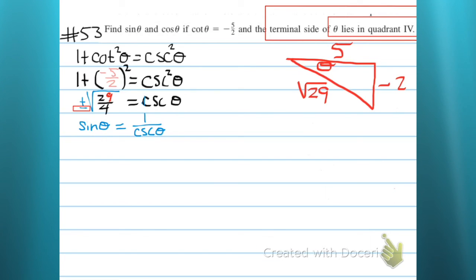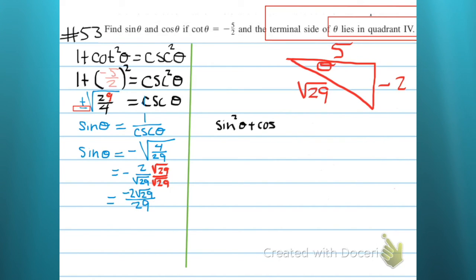And now we're using the reciprocal identity. The sine is equal to one over the cosecant of theta. So then I go ahead and I put that in there. I reciprocate and take the reciprocal. Rationalize. That's why I got that.